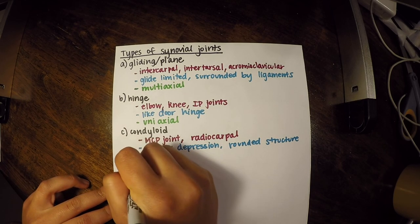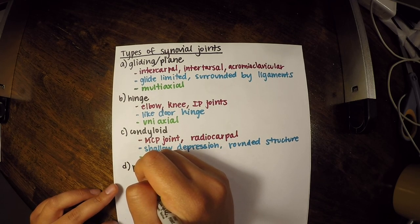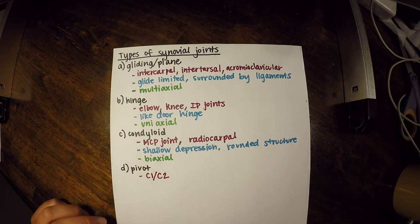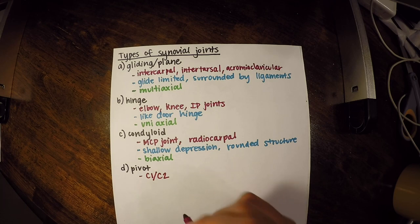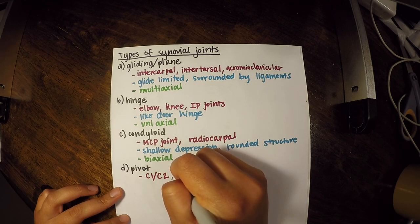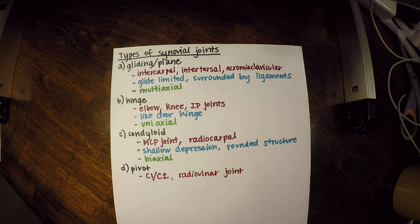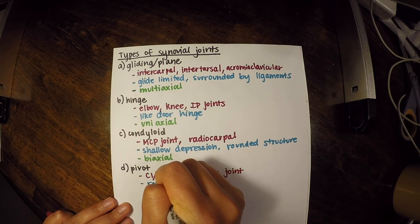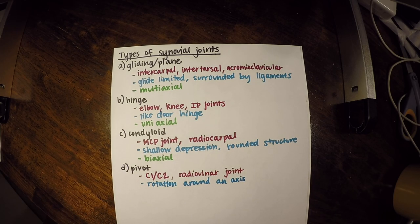Next are pivot joints. Examples include C1 on C2, or the atlas on the axis — about 50% of neck rotation range of motion comes from that joint. The radial-ulnar joint is also a pivot joint. Pivot joints require rotation around an axis, making them uniaxial.